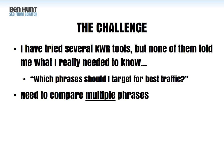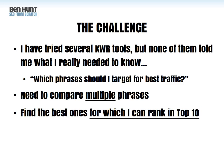The ideal keyword research process needs to allow me to compare multiple phrases — as many as possible — and tell me which ones I can rank in the top 10 for. As we saw in the last video, there's really no point going for a market where you can't rank in the top 10, because that's where the money and the prizes are. It's better to rank in the top 10 for something than to rank on page 3 or 4 for a more popular term.